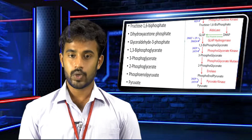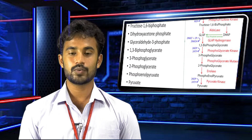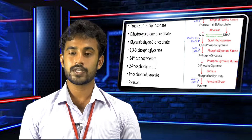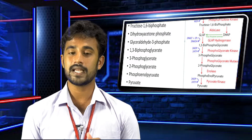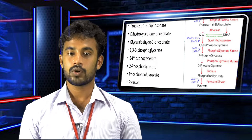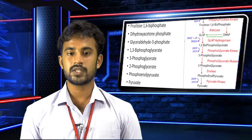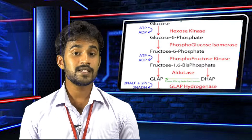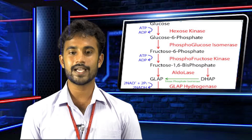Then B: 1,3-bisphosphoglycerate. Then P: 3-phosphoglycerate. Then one more P: 2-phosphoglycerate. Then from the word PREPARE, I have taken three letters — that is PEP, phosphoenolpyruvate. Then the last intermediate involved in the glycolysis pathway is pyruvate — that is P, pyruvate. This is how you can easily remember the intermediates involved in the glycolysis pathway.